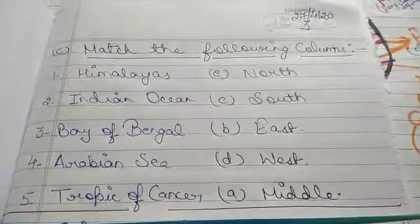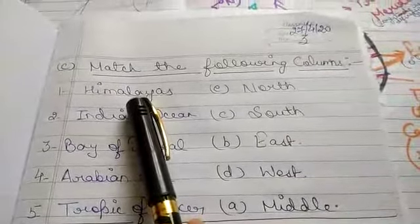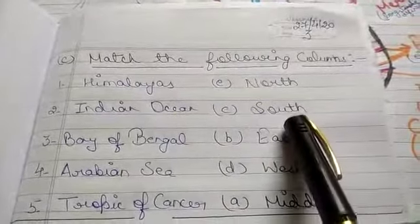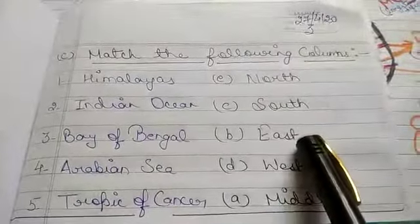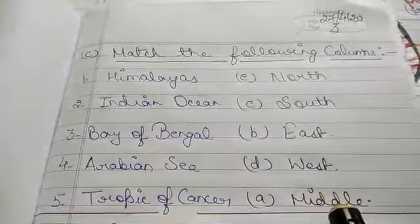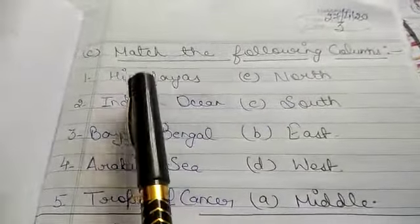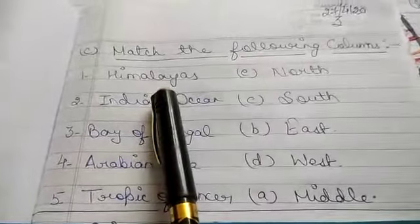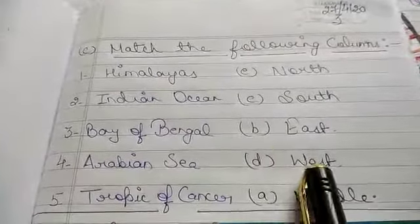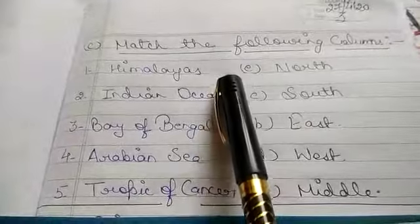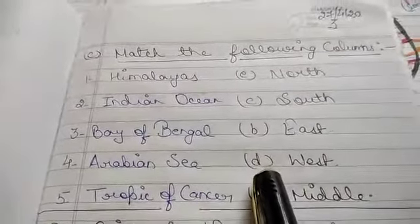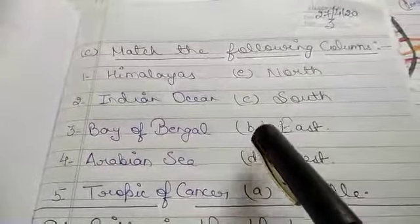Now, match the following columns. Himalayas are towards the north. Indian Ocean is towards the south. Bay of Bengal is towards the east. Arabian Sea is towards the west. And Tropic of Cancer is in the middle. The correct order to write from the options in the book is: E, C, B, D, A.